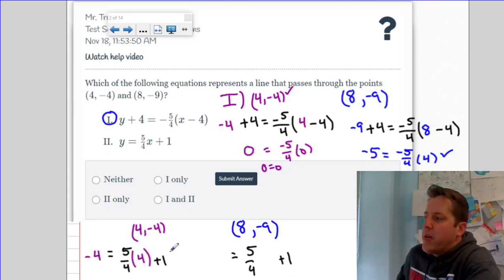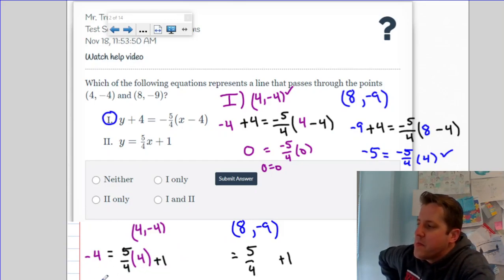When I plug in the first point, I get negative 4 equals 5 plus 1. That's not true, which tells me that this point doesn't work. If that point doesn't work, then it doesn't matter what's going on with this other point. So line 2 is not going to work for both of the points.